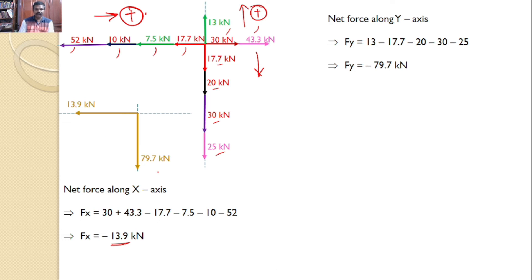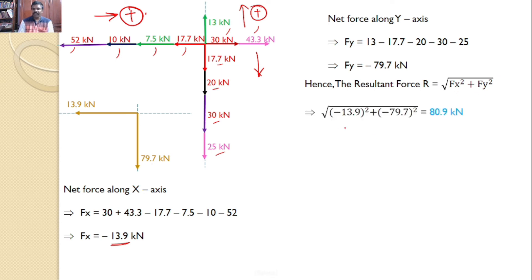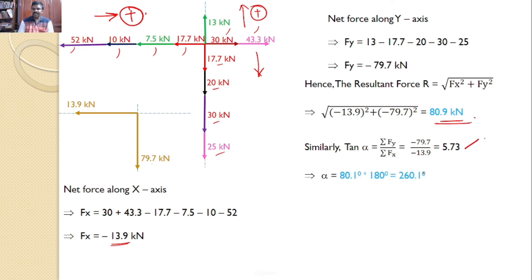The magnitudes are 13.9 and 79.7. The resultant force is the square root of Fx² + Fy², giving 80.9 kN. The angle is arctan(ΣFy / ΣFx), which gives 5.73, so alpha equals 80.1°. Since both x and y components are negative, the resultant is in the third quadrant, so adding 180° gives 260.1°. This is the resultant force: magnitude 80.9 kN at 260.1°.